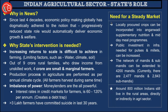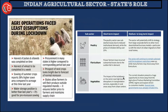How can the state intervene? Locally procured crops can be incorporated into Anganwadi supplementary nutrition and mid-day meal programs. Secondly, public investment can be done in infrastructure needed for pulse and millet production, which would increase their output. Thirdly, the network of mandis and sub-mandis can be extended to 4,200 mandis — currently there are 2,477 mandis and 2,843 sub-mandis. These are the ways the state needs to intervene, as more than 800 million Indians are directly or indirectly dependent on the agricultural sector.